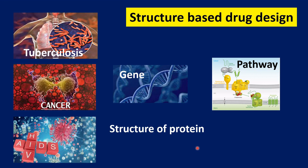To identify effective inhibitors we need the structure of the protein. This structure can be identified using structural databases like the Protein Data Bank, which has crystal structures and NMR structures of proteins deposited in it. When a structure is not available in the database, we can use homology modeling techniques to build a 3D structure of the protein.